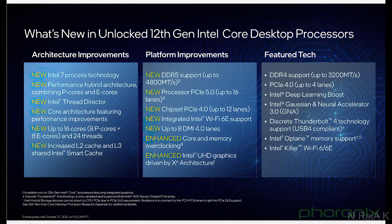Under Architecture Improvements, you have P-Cores, E-Cores, and Thread Director. This includes architecture performance improvements, up to 16 cores total — that is 8 Performance Cores and 8 Efficient Cores — for a maximum of 24 threads. Also included are improved L2 and L3 cache.